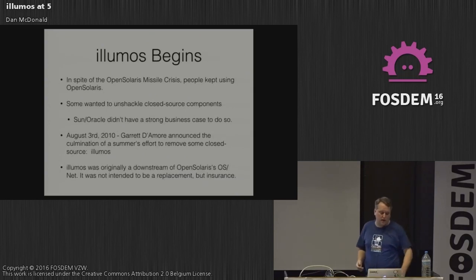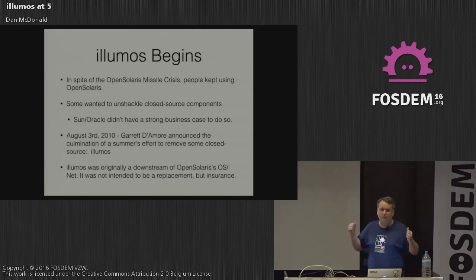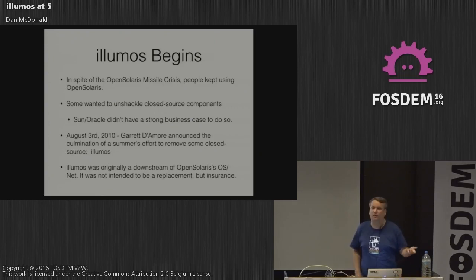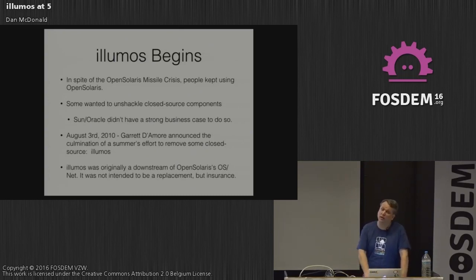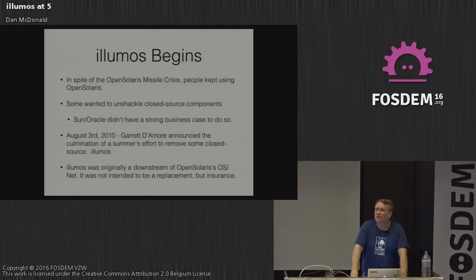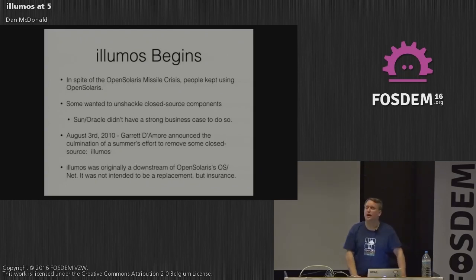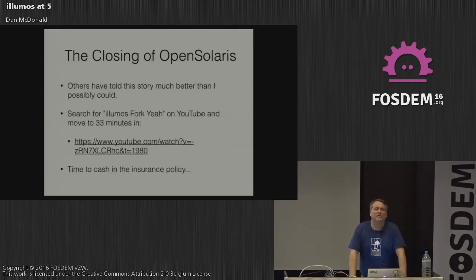In spite of the OpenSolaris difficulties, we had a community building around us. Some people wanted to unshackle closed-source components. So Garrett Damore, Rich Lowe, and others started writing open-source replacements, borrowing a lot of code from FreeBSD. In August 2010, Garrett Damore announced the culmination of that effort — called Illumos — which removed more of the closed source from the ON gate. Illumos was originally intended to be a downstream of OpenSolaris, but with Oracle having happened, the community might need an insurance policy. Sure enough, that happened.